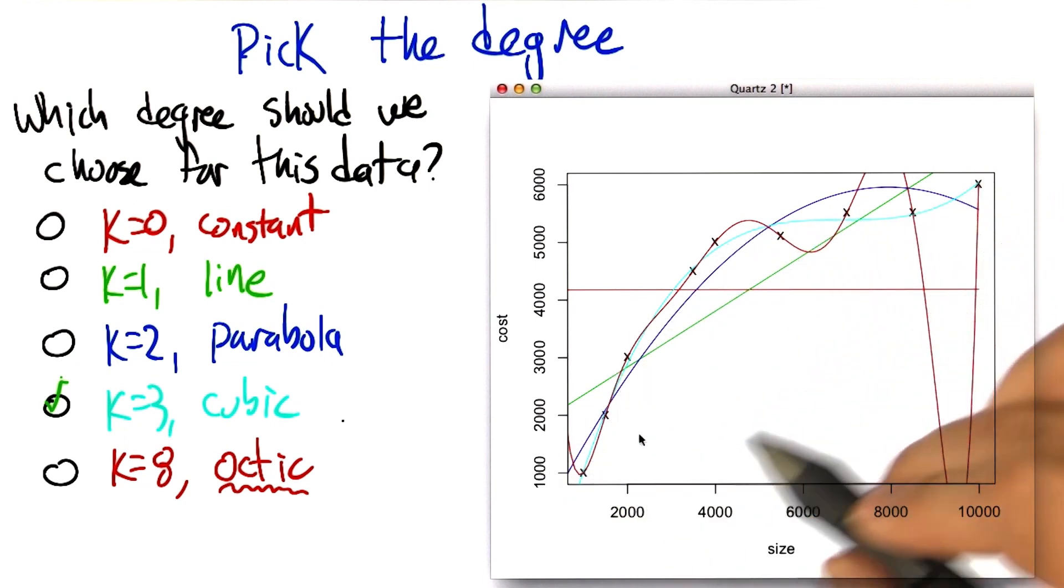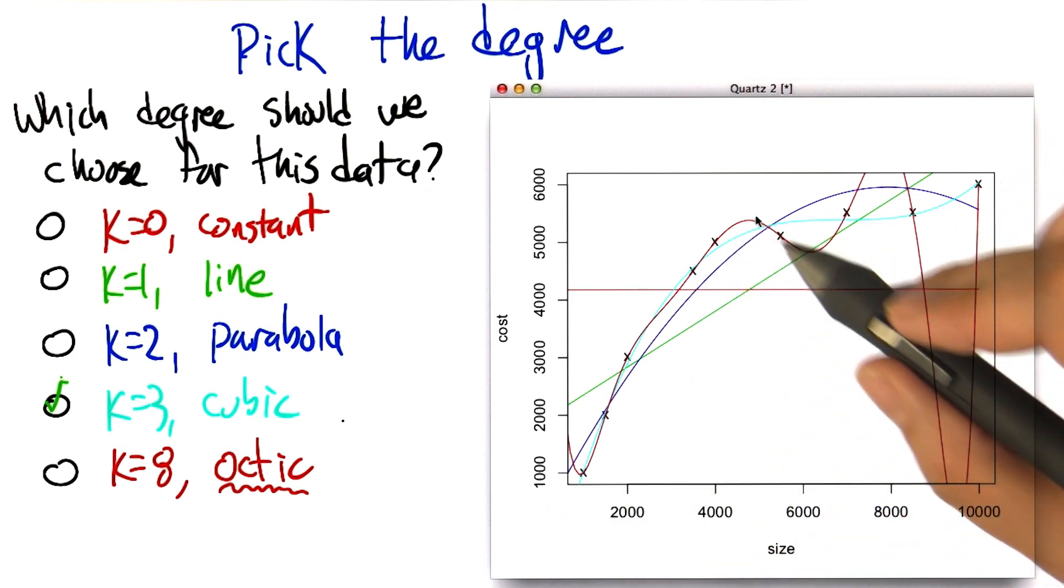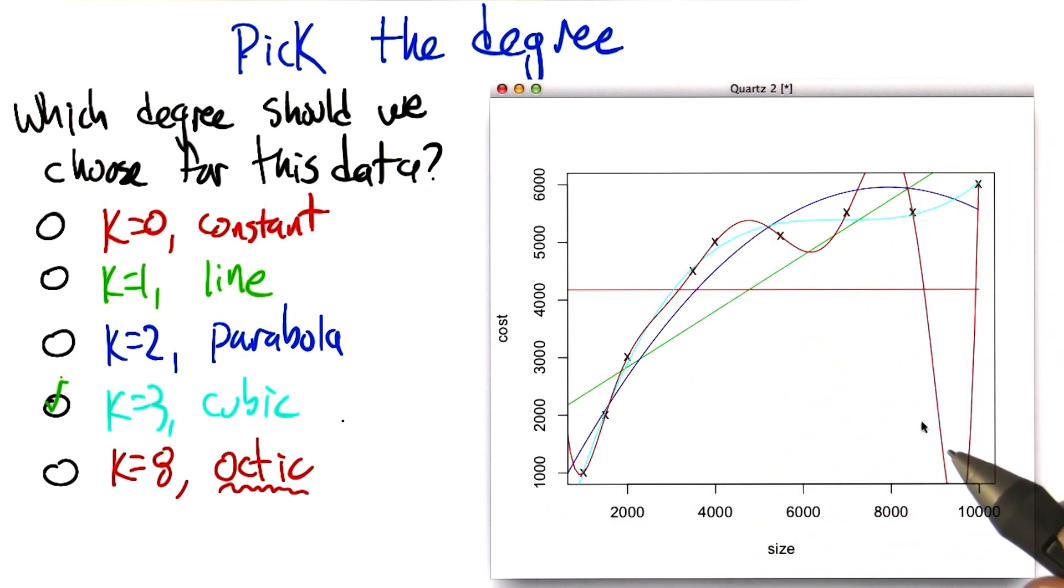And that's the problem with 8, is that 8 says, you know, the training data that I have is exactly right and I should bend and move heaven and earth in order to match the data. And that's probably the wrong thing, certainly if there's any noise or anything else going on in the data.